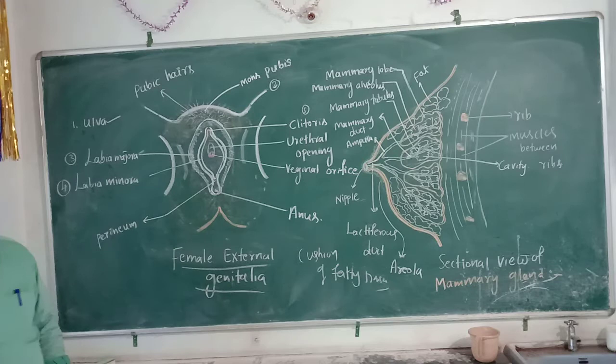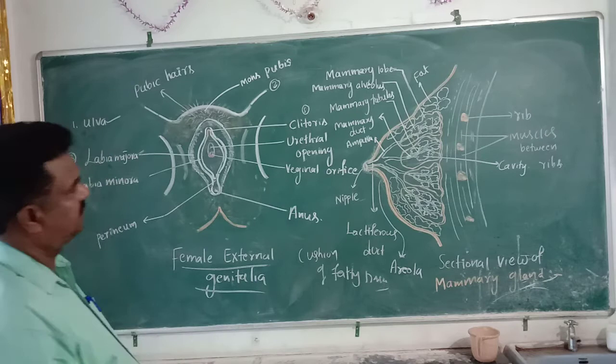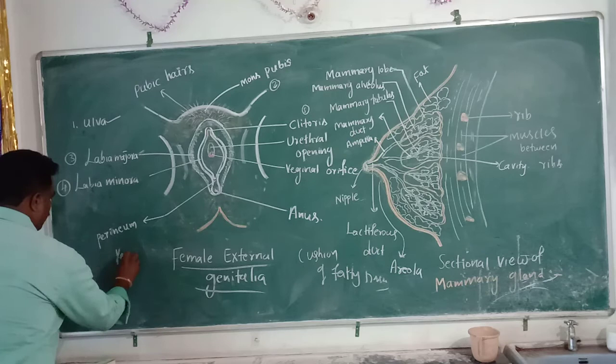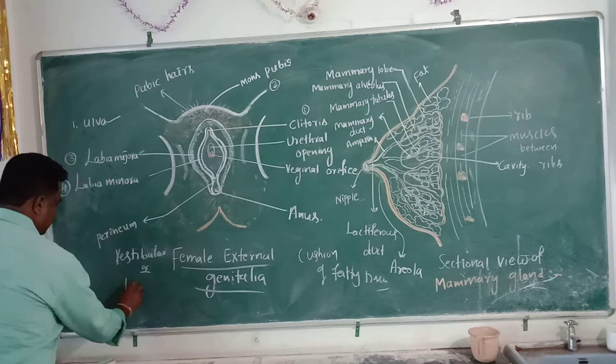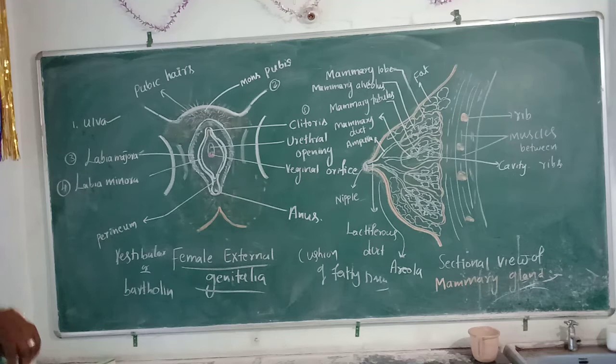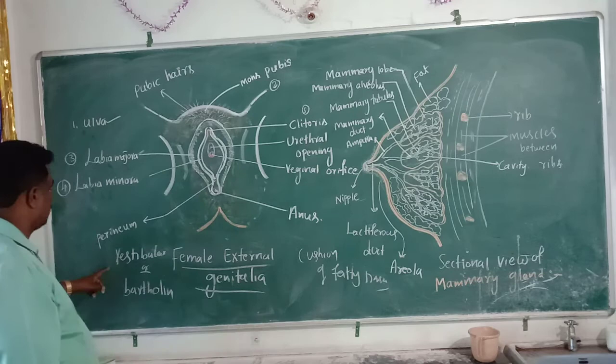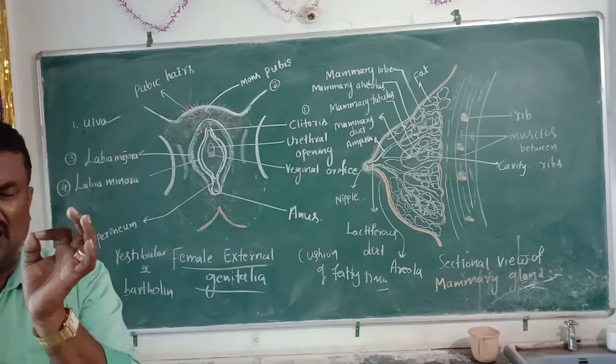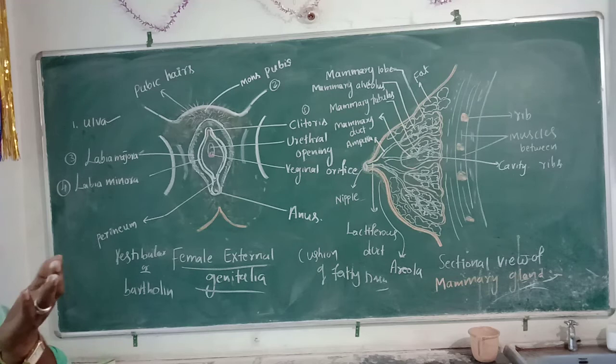That completes female external genitalia. Now let us go for the Bartholin glands, also called vestibular glands. Bartholin glands are a pair of small glands which are present on either side of the vaginal cavity.